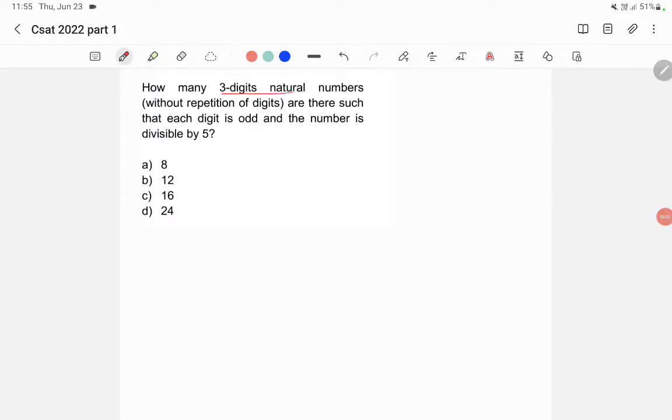How many three-digit natural numbers without repetition of digits are there such that each digit is odd and the number is divisible by 5?